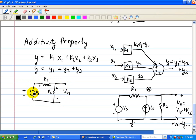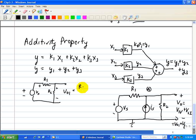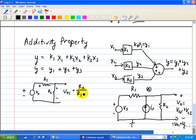So this is VO1 due to this voltage source, and that's just simply the voltage divider, R2 over R1 plus R2 times VS.